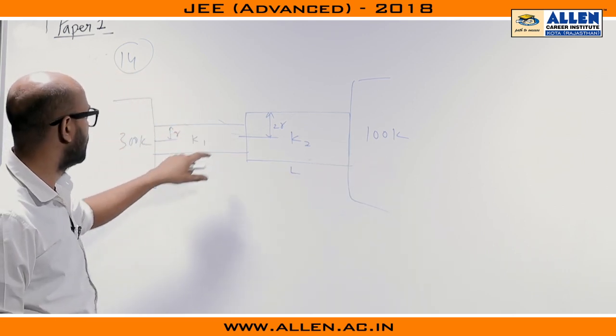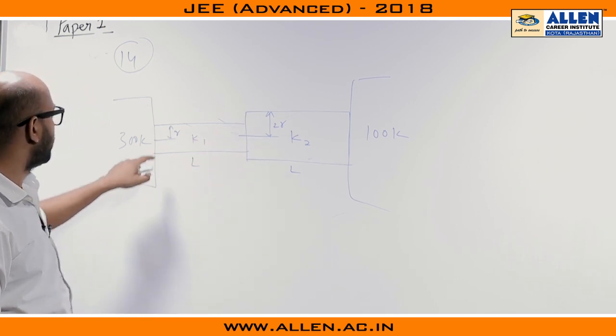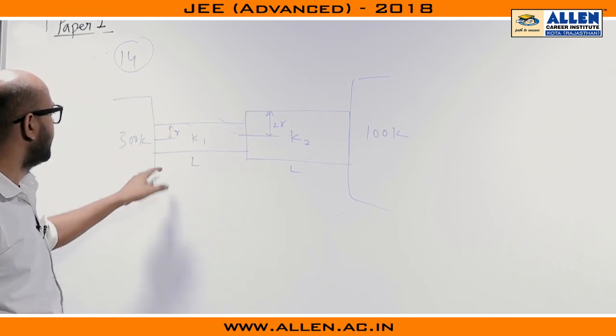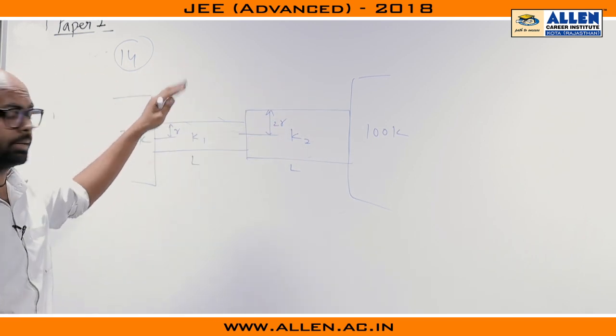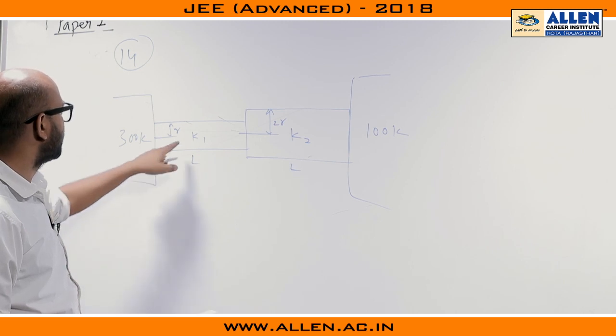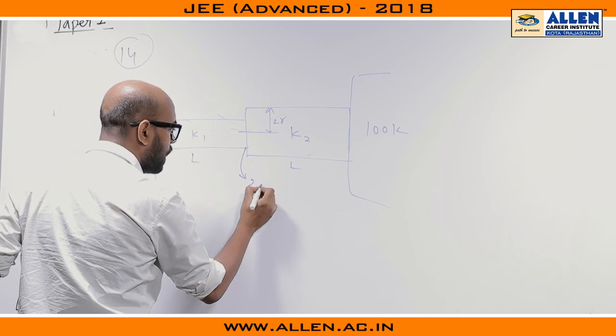And they have kept two rods of different conductivity, different radius, K1, K2 are the conductivities, R and 2R are their radii and same length. And they are lagged from these sides so that there will be no heat transfer here. They are asking what is the relation between K1 and K2 such that temperature of the junction is 200.